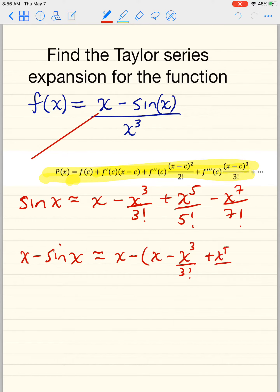Now, this guy here: x minus the first x cancel out, and then you get positive x to the third over 3 factorial minus x to the fifth over 5 factorial plus x to the seventh over 7 factorial.